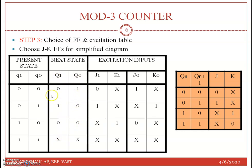Mode-3 counter has 3 states: the count goes 0, 1, 2 and back. With 2 flip-flops there are 4 possible states, so state 3 (binary 11) is an unused don't-care state. The present state is filled for all combinations; the next state for the valid states is straightforward, and the unused state 11 is marked as don't-care. J1K1 and J0K0 are filled accordingly.